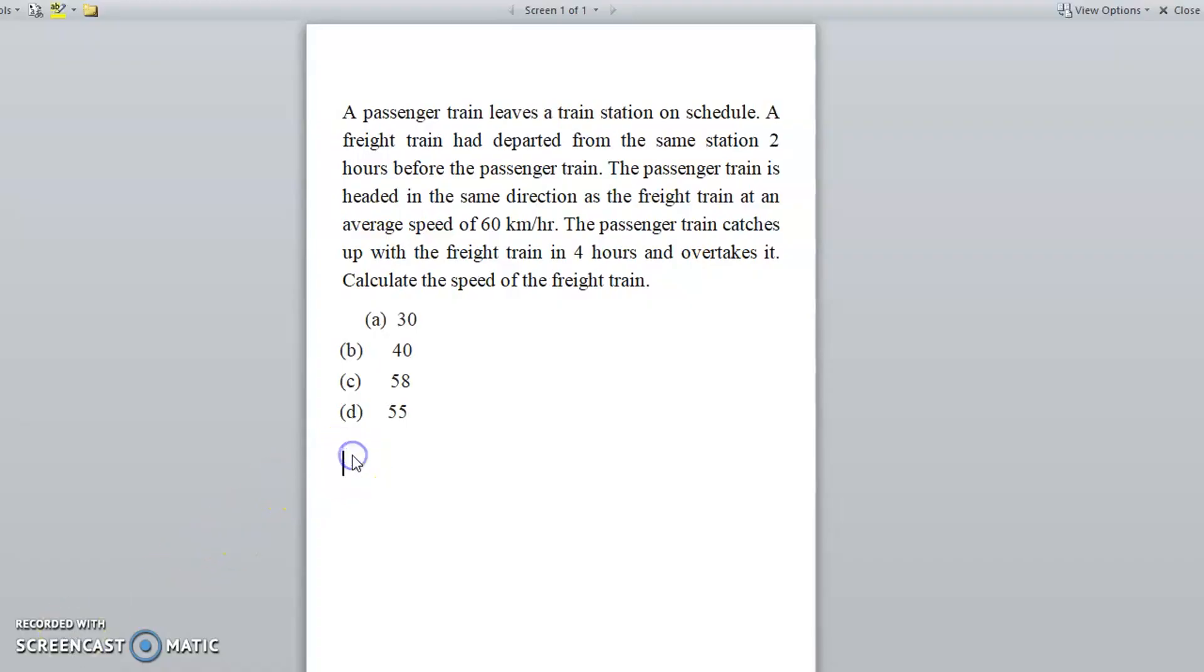So now you know the formula for distance: distance is equal to speed into time, that is D = S × T. So as per this formula, the distance covered by passenger train is equal to what we get? Speed into time.